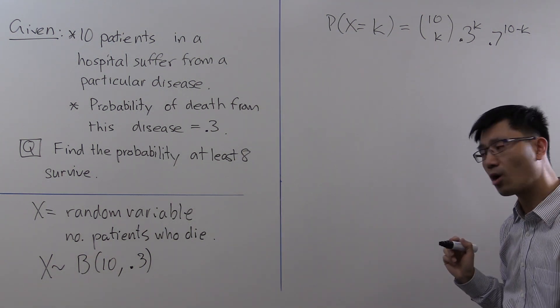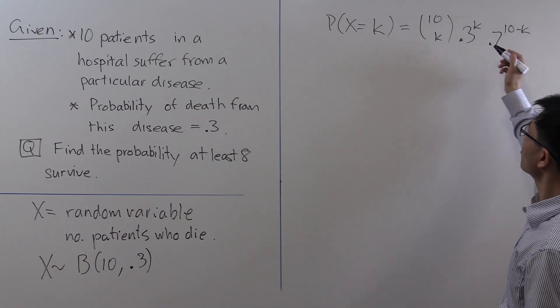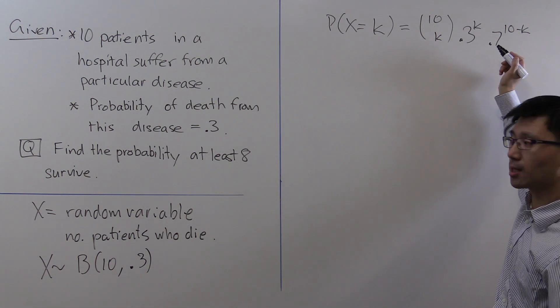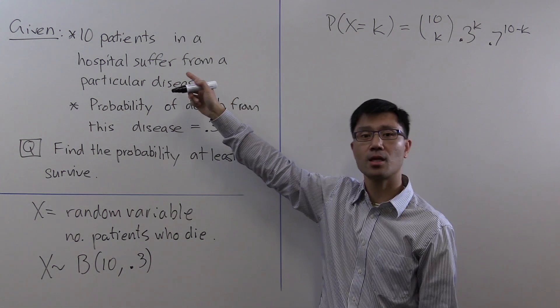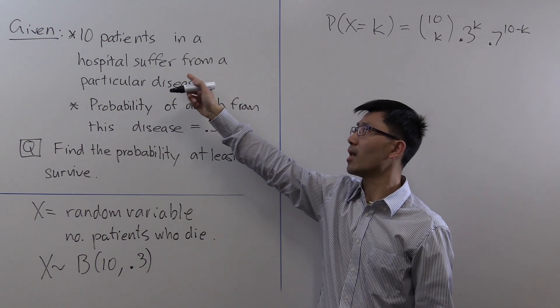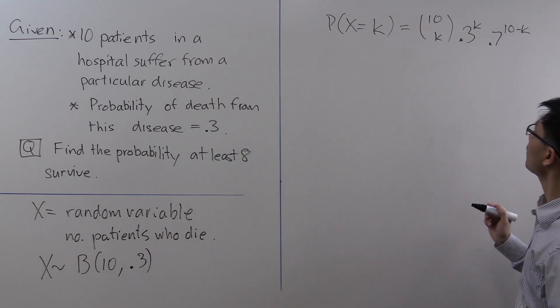Let's think through this slowly. Suppose you want to work out the probability that the first k of these ten patients die but the last 10 minus k survive. What's the probability of that?